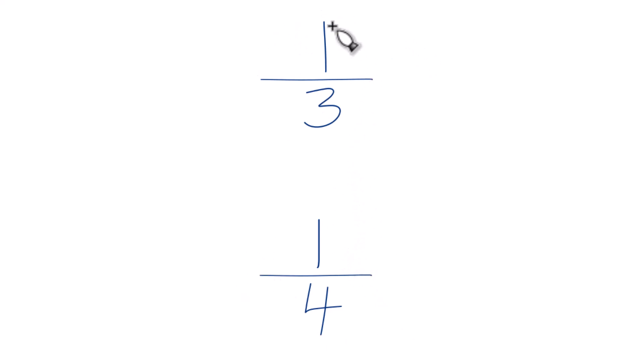So first off, you could divide 1 by 3 on your calculator and then divide 1 by 4 and just compare the decimals. That would tell you which fraction is greater, 1 third or 1 fourth.